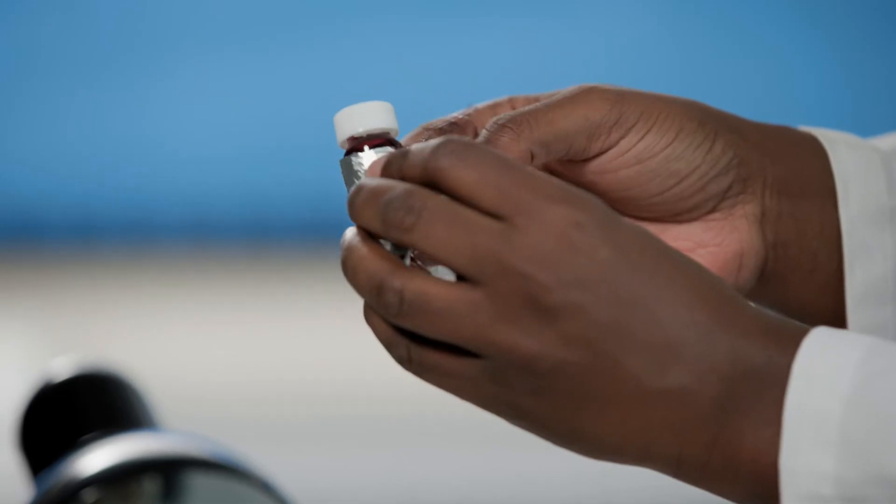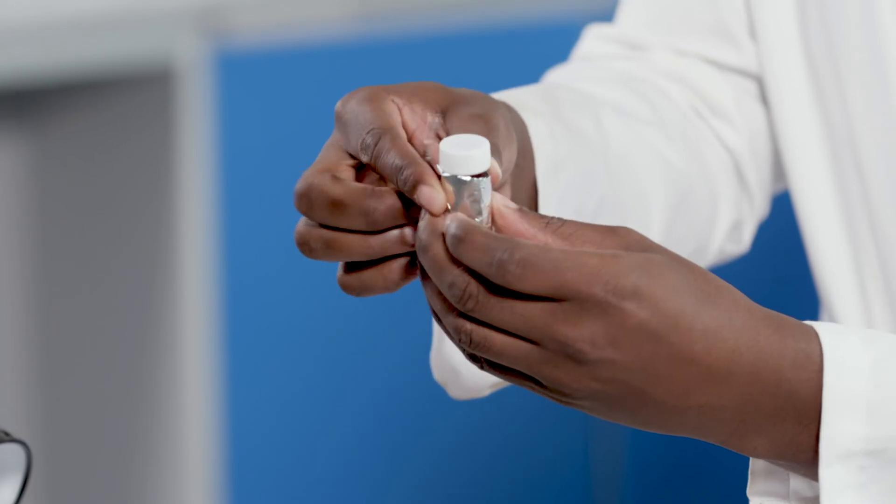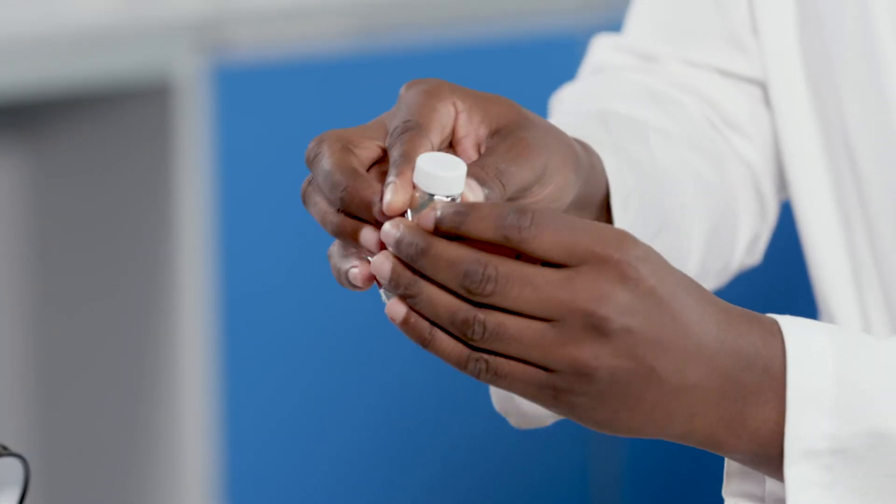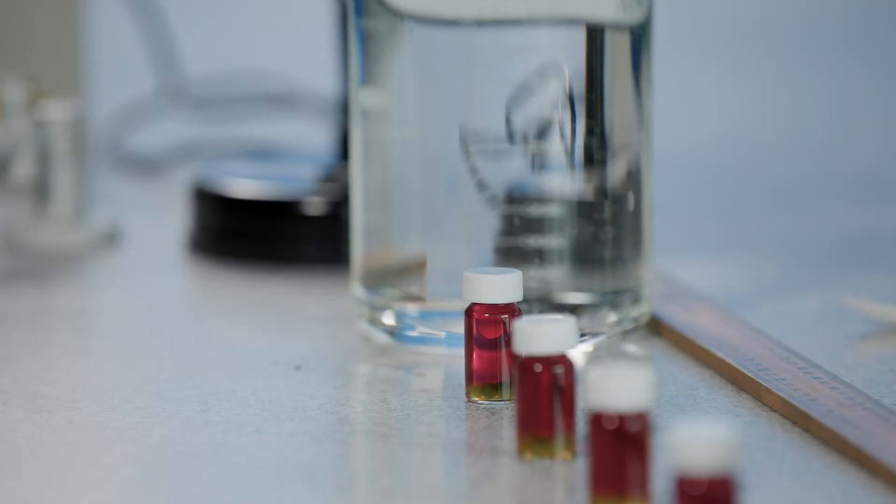To set up your negative control, cover one bottle in kitchen foil so that it's in the dark and place it next to the bottle that is closest to the lamp.